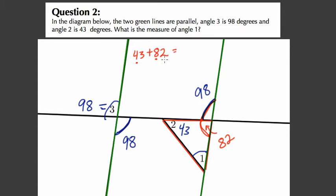Well, 80 and 40 is 120, 3 and 2 is 5, so it's 125 degrees. What's left here is 180 degrees in a triangle minus 125 degrees, and that of course is 55 degrees.